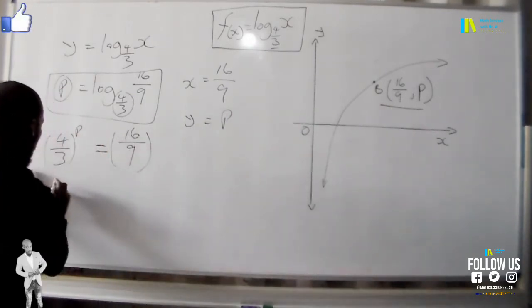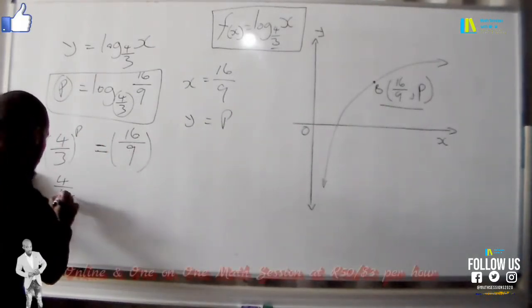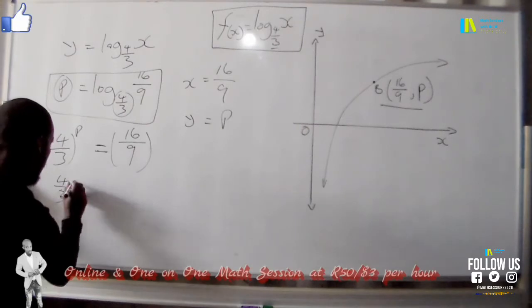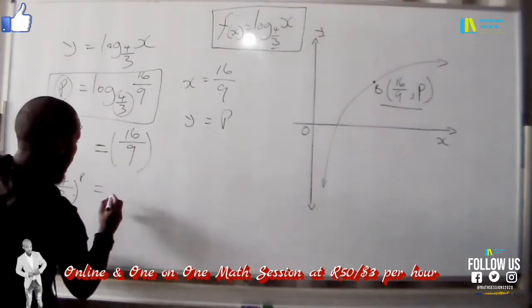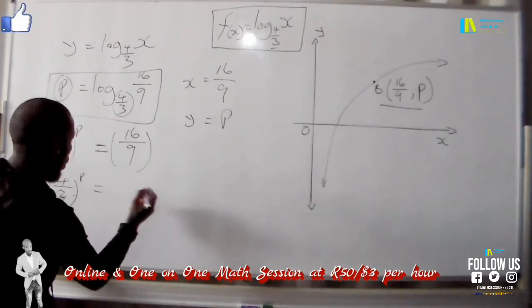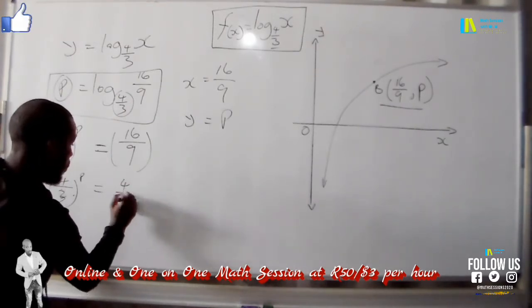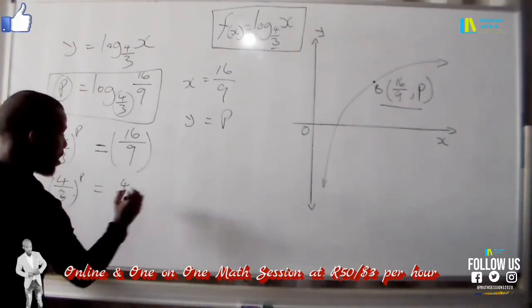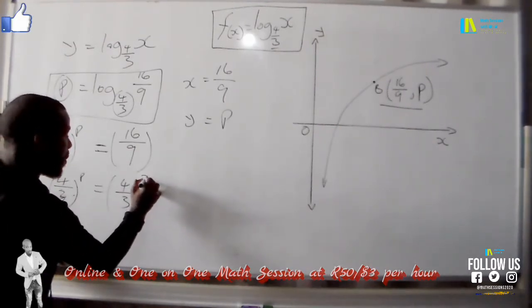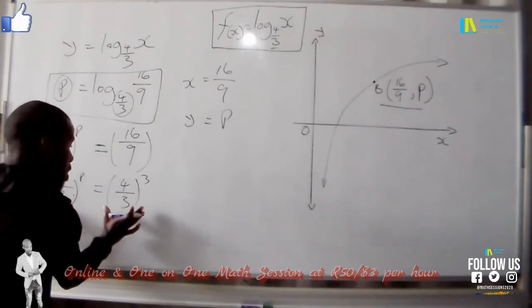We have 16/9 and we have 4/3, so we must find what is common between the two. 4/3 remains the same, we have 4/3 raised to the exponent of p, and we change 16/9 because 16 is 4 squared and 9 is the same as 3 squared. So it's (4/3) squared. Now we have made these bases the same.